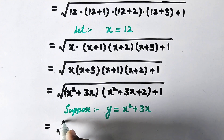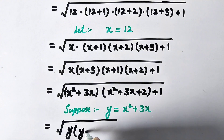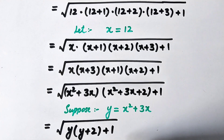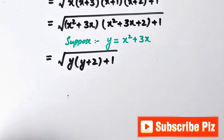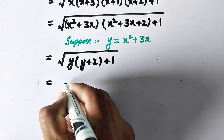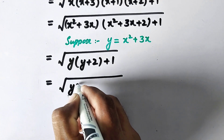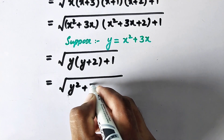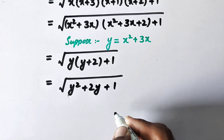This gives us the square root of y times y plus 2 plus 1, which equals the square root of y squared plus 2y plus 1.